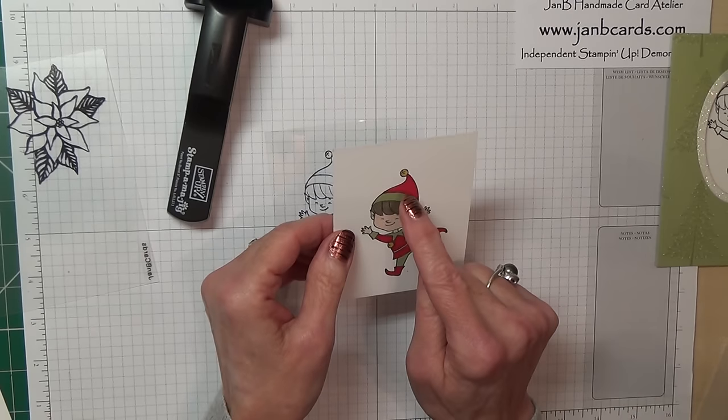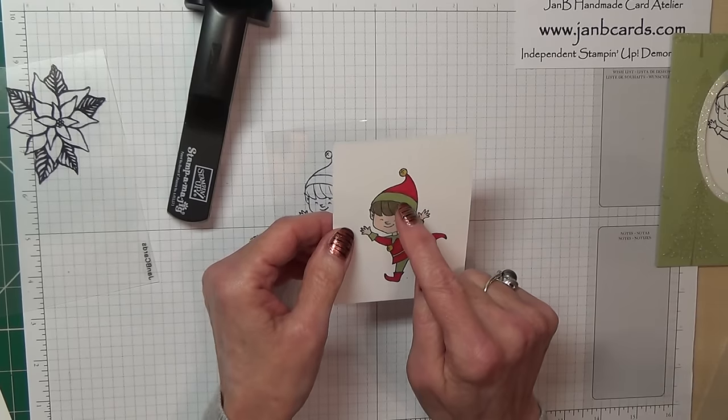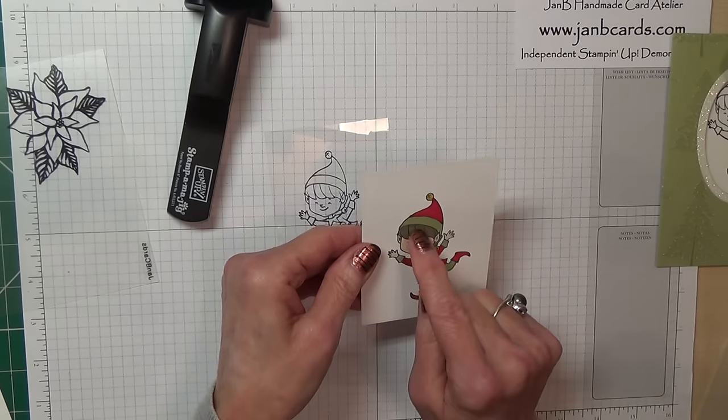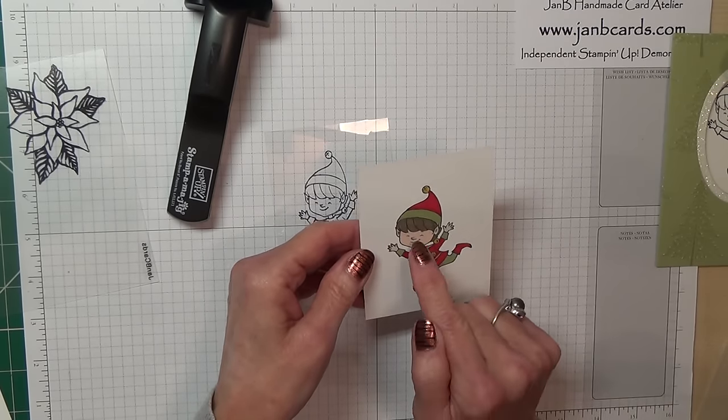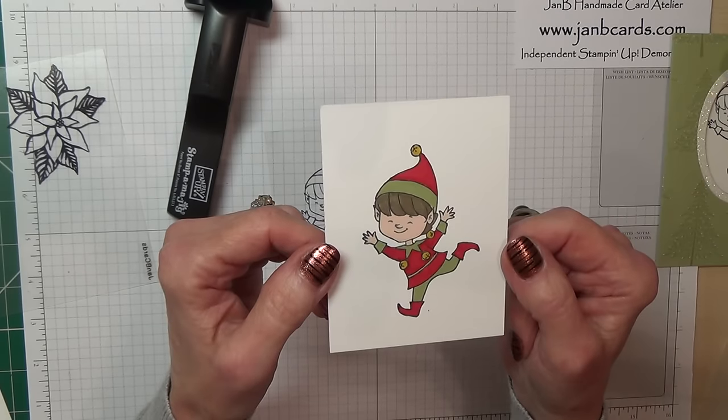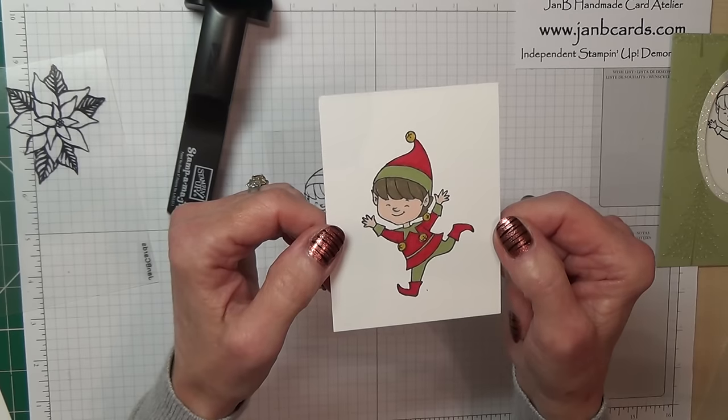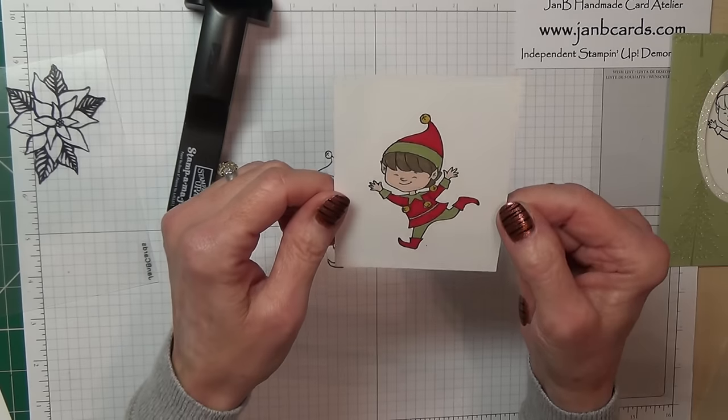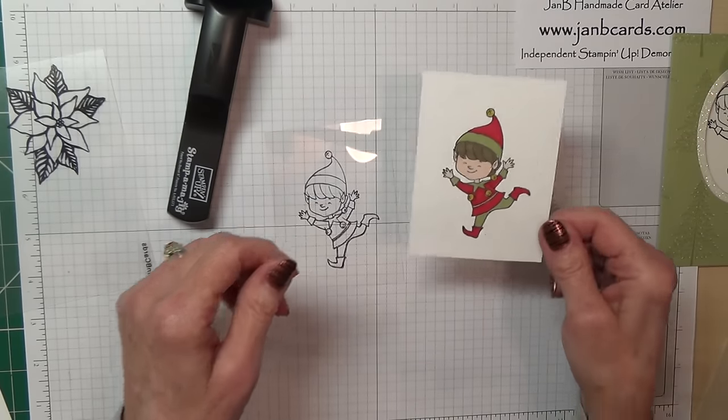The next job is to paint this. Obviously to get this painted it's going to be quite a time consuming job, so I've already done it. The colors I've used: for the red I've used Real Red, and this is all with our markers, and Pear Pizzazz. The hair is Soft Suede. The bells are Crushed Curry. The face I've used Blush Blossom which is a retired marker pen.